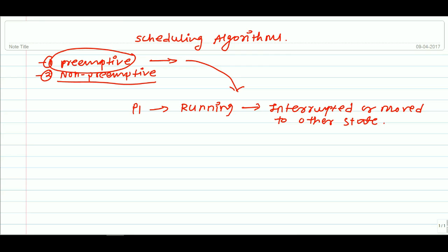In non-preemptive scheduling, once the process is submitted to the CPU it will continue to execute until it terminates or blocks itself to wait for some input/output request. So in non-preemptive scheduling, once a process is submitted to the CPU it will continue until it is terminated or blocks itself into a waiting state.